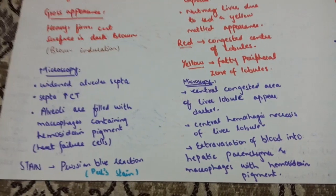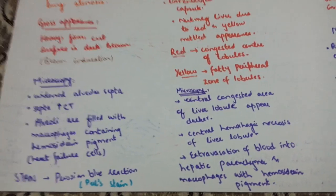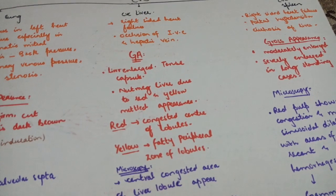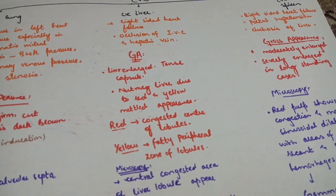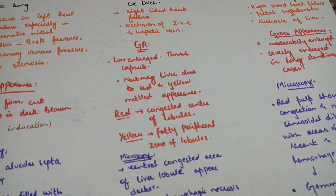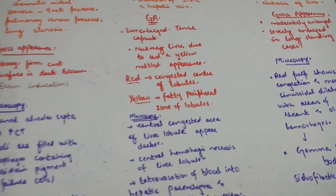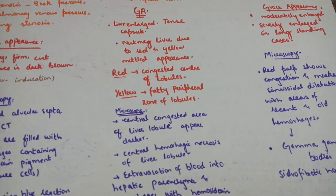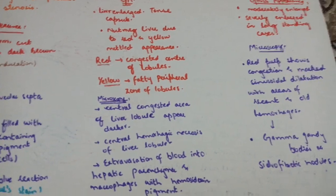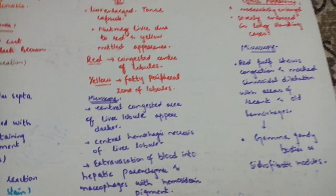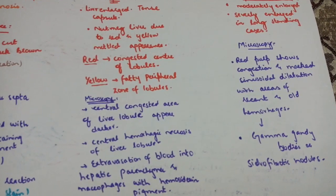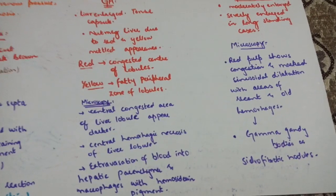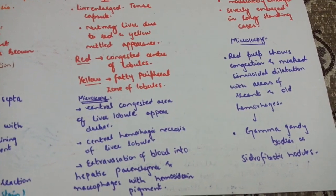CVC of the liver occurs in right-sided heart failure or occlusion of the inferior vena cava or hepatic vein. Gross appearance: the liver is enlarged, the capsule is tense, and it shows a nutmeg liver appearance — the center is dark red and congested while the periphery is pale, creating a nutmeg pattern.